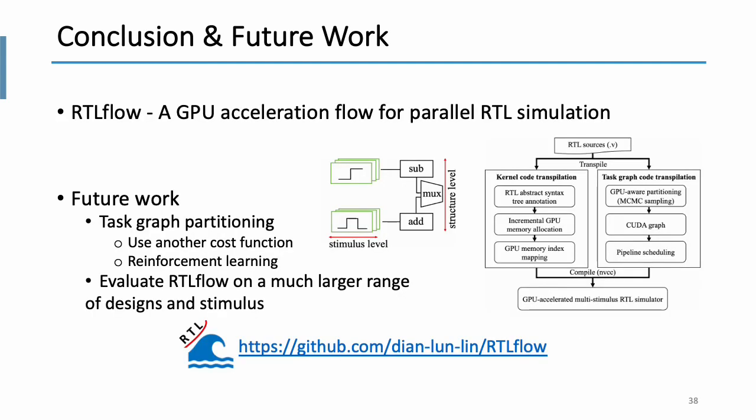We have introduced RTLflow, a GPU acceleration flow for parallel RTL simulation. We leverage both stimulus and structural-level parallelism to speed up RTL simulation using one GPU. There are two future works we can do. The first one is to improve test graph partitioning part. Right now, we just take the summation of all the cost of nodes in the task. What we can do is to try another cost function to precisely predict the runtime cost of the task. And maybe we can replace MCMC sampling with other machine learning methods, like reinforcement learning. The second part is to evaluate RTLflow on a much larger range of designs and stimulus. Alright, so that's all I have today. Thanks for listening.